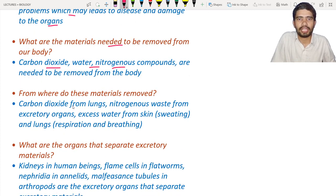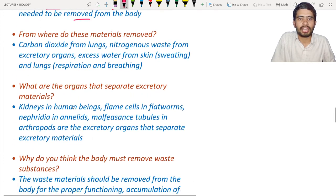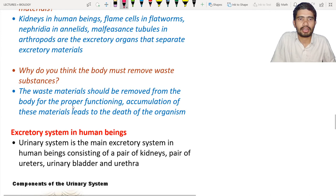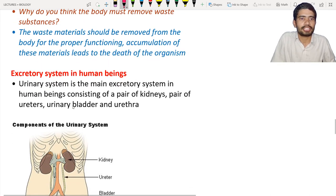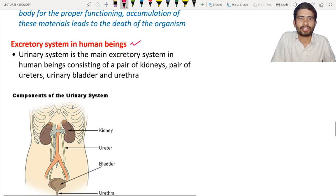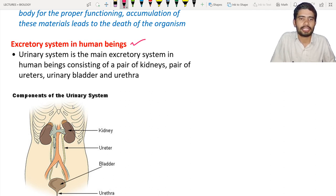The materials that need to be removed from the body include carbon dioxide, water, and nitrogen components. The excretory system in human beings consists of the kidneys, ureters, urinary bladder, and urethra — these are the components of the excretory system.